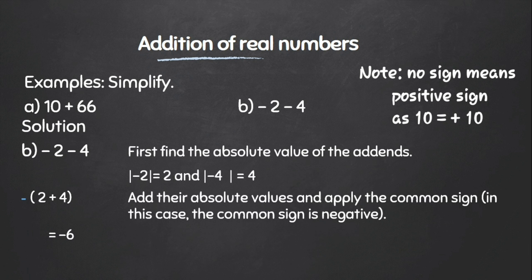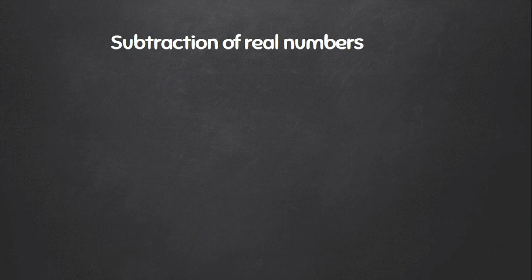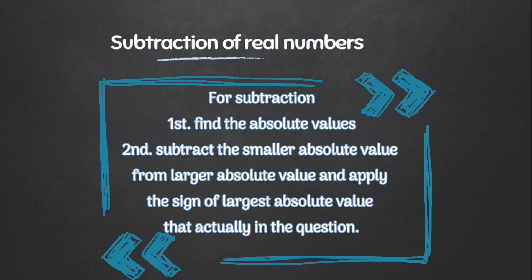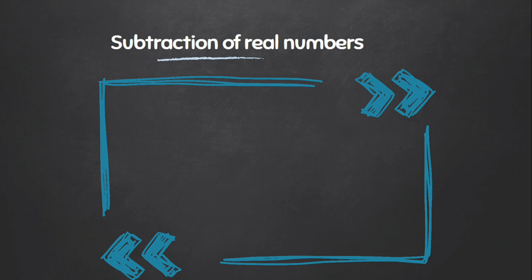When simplifying numbers with different signs, we perform subtraction. In this case, we first find the absolute values of the given numbers, then subtract the smaller absolute value from the larger absolute value, and apply the sign of the number having the larger absolute value.